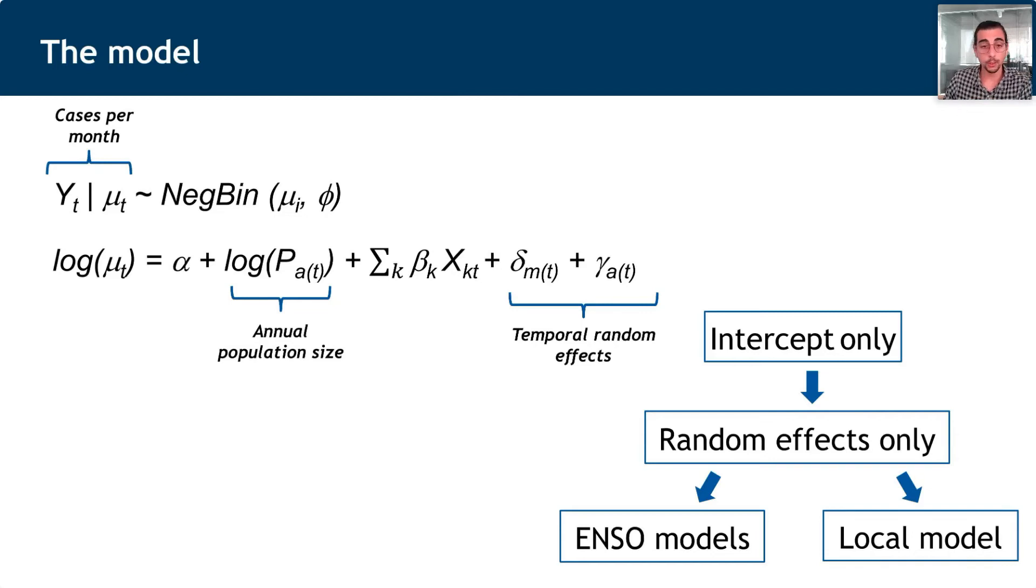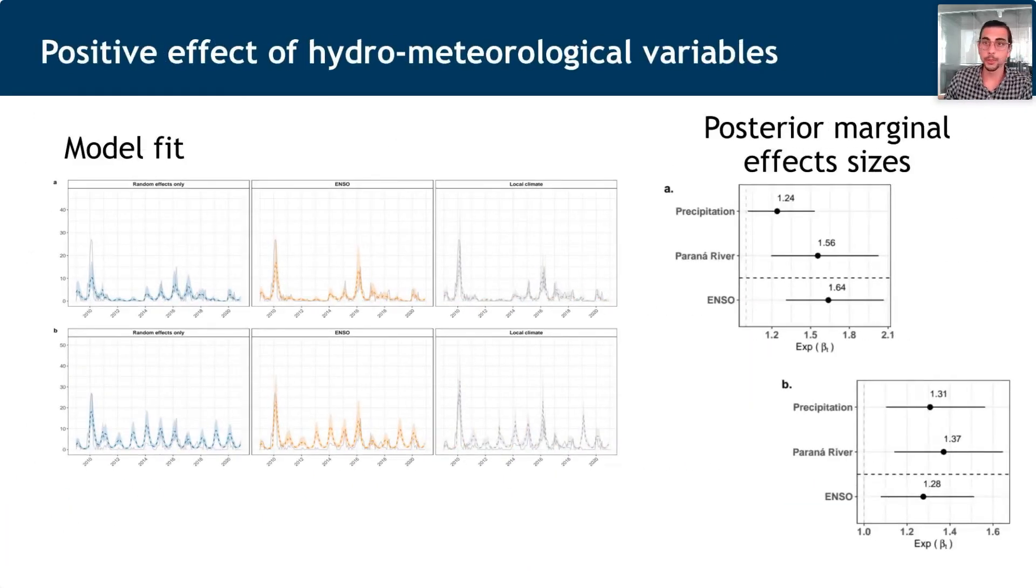To show you first the results, this is how well the model fit. You have in gray line the observed number of cases, and in colored line the fitted values with the 95% credible interval. You can see it actually follows the time series quite well, which tells us the model fit is quite good. We can interpret now the effect sizes of the different hydrometeorological variables, and we see there is a positive effect of all the variables we included, and none of them included the null value, so in a frequentist approach we would assume this is significant.